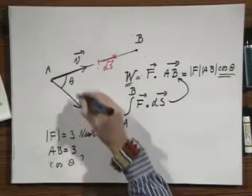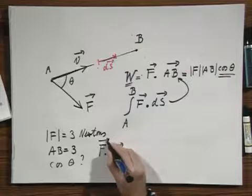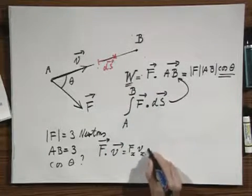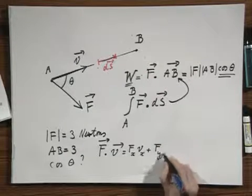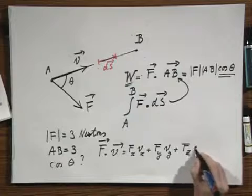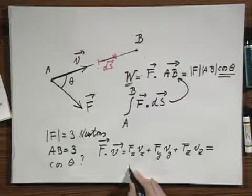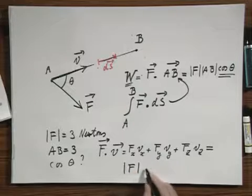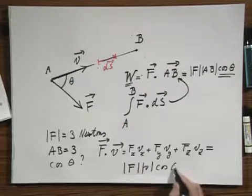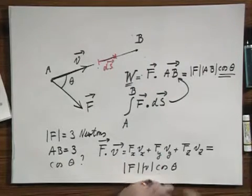Well, F dot V, the dot product between F and V, equals Fx Vx plus Fy Vy plus Fz Vz, and that equals F magnitude, V magnitude, times the cosine of theta. And this allows you immediately to calculate cosine theta.